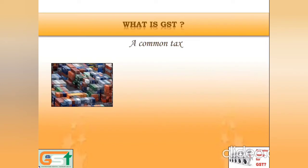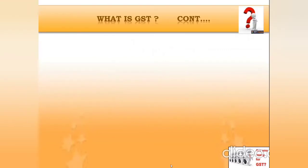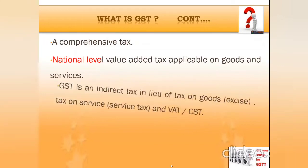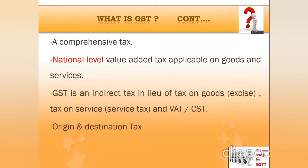Now let us focus on GST — what is GST? GST is a common tax on goods and services. It is a comprehensive tax and a value-added tax applicable on goods and services at the national level. It is a unified tax in place of tax on goods — that is excise — tax on services — that is service tax — and Value Added Tax or Central Sales Tax. It is also termed as an origin and destination tax, where the origin point is the starting place from which goods are sent out, and the destination point is the receiving place of goods.